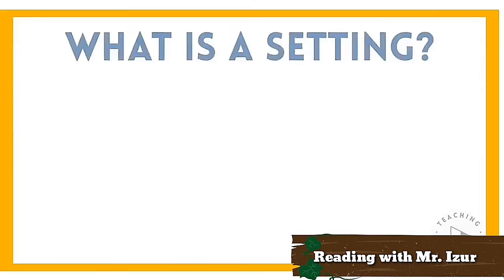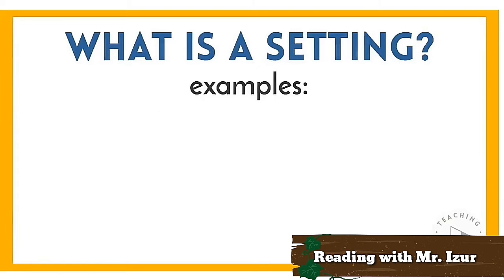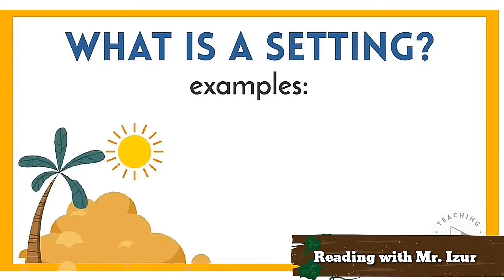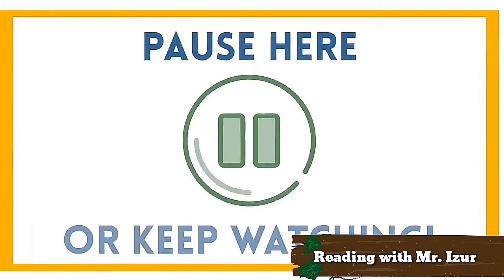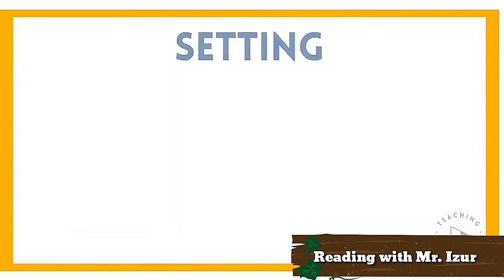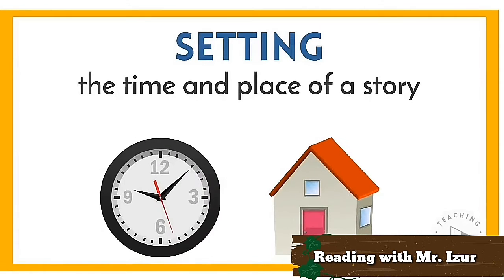Can you figure out the definition of setting from the following examples? The setting might be a hot sunny day at the beach during the summertime, or it could be a cold rainy night at a haunted house in October. So what do you think the definition of setting is? Pause here to think, or keep watching to find out. Setting is the time and place of a story.